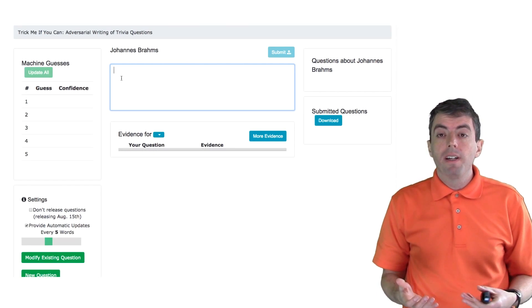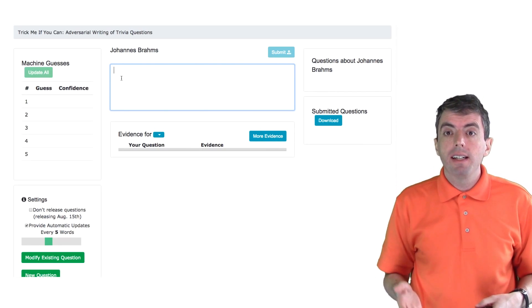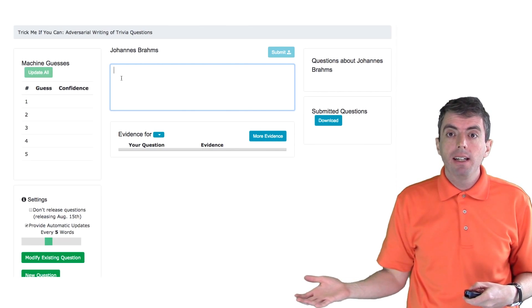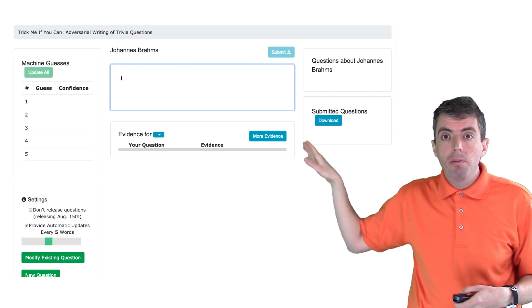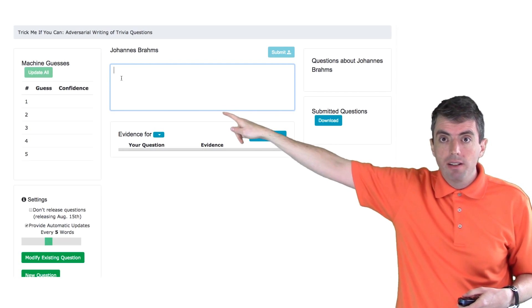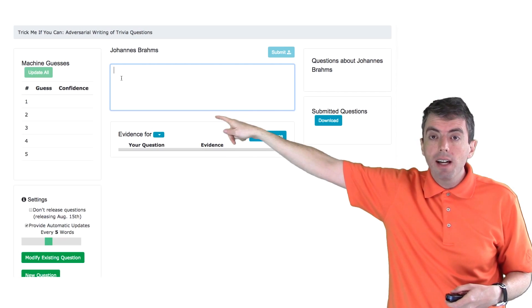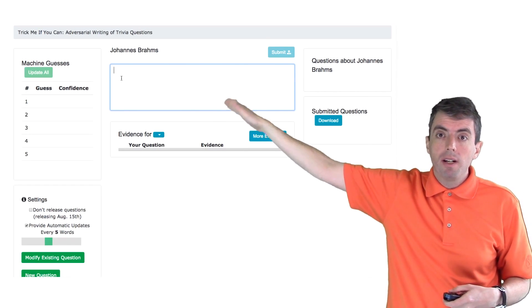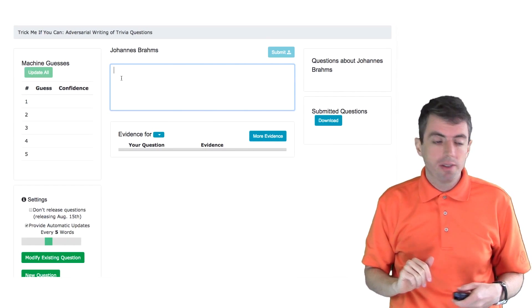Once you're in the interface, you can start writing your question. This works like any normal text box. You start writing, and as you write, there will be guesses that appear on the far left-hand side. Those guesses show you what Quanta is thinking the answer is to this question.